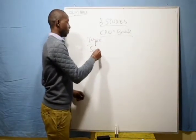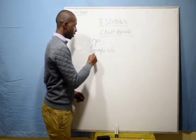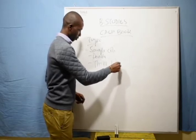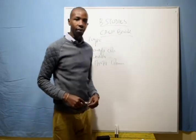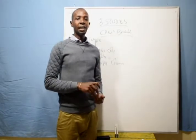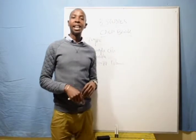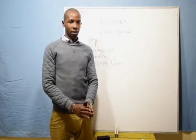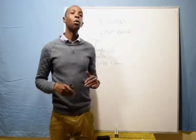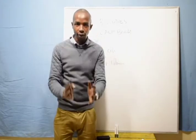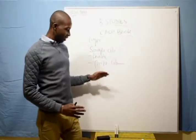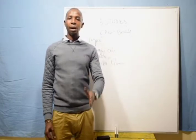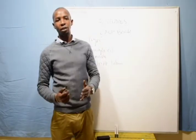We have basic types of cash books. We have the single column, the double column, and the three column cash books. In a single column, it is used to record either cash transactions only or bank transactions only, separately. In a double column, we have a column for cash transactions and a column for bank transactions. And in a three-column cash book, we have a column for cash, a column for bank, and a column for discount received and a discount that is allowed.